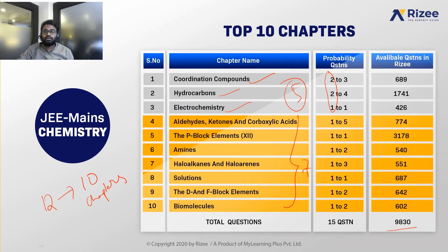You have a total of 9,830 questions distributed across easy, moderate, and difficult levels for your Chemistry practice.